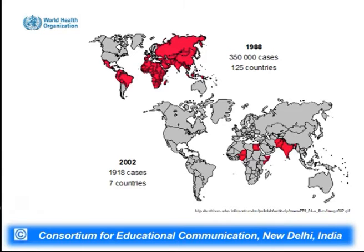Looking at the global map: in 1988, there were about 125 polio endemic countries reporting about 350,000 cases, which decreased to about 1,918 cases from 7 countries in 2002, and in 2015, only two polio endemic countries report about 74 cases. We can see how these numbers have decreased over the years.